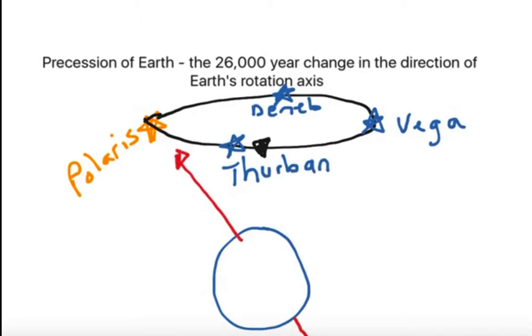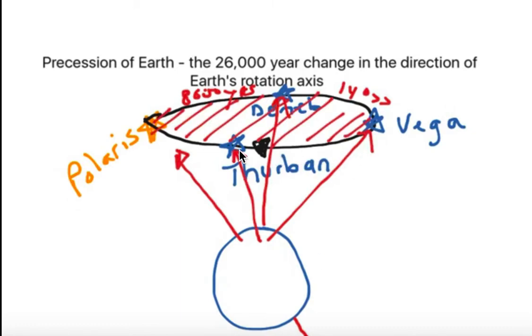Currently, our Earth's rotation axis is pointing very near Polaris. But in about 8,000 years from now, it's going to be pointing to Deneb, slowly moving in the clockwise direction. Then in about 14,000 years from now, it'll continue to slowly move clockwise, eventually pointing to Vega, and finally finishing up by pointing to Thurban. And then once again, Polaris, slowly tracing out this cone shape in the sky.